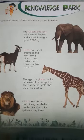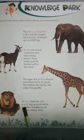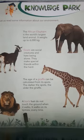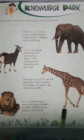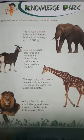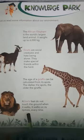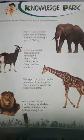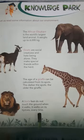So this is lion — lion is called the king of the jungle. A lion's feet do not touch the ground when it walks; it walks on its tip toes every time. When we walk, we keep our feet on the ground, but this lion walks only on its toes — it will not keep its feet fully on the ground.